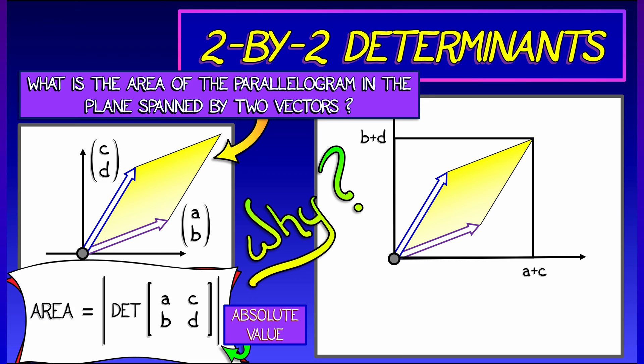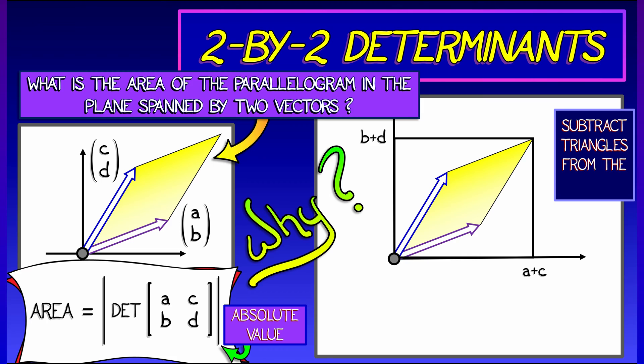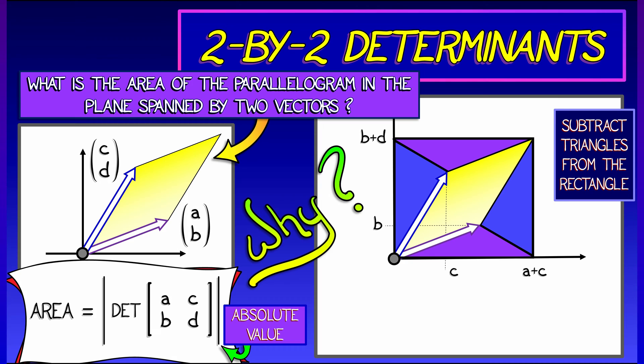What are the dimensions of that rectangle going to be? Well, in the horizontal direction, it's going to be a plus c. And in the vertical direction, it's going to be b plus d. And now I'm going to get the area of the parallelogram by subtracting the areas of certain triangles from that rectangle.